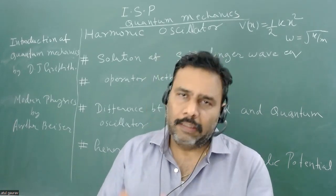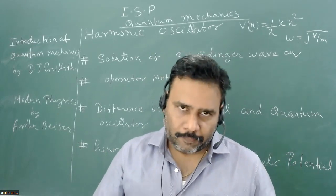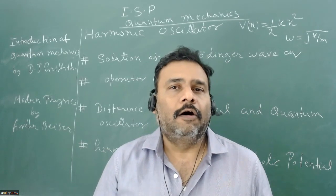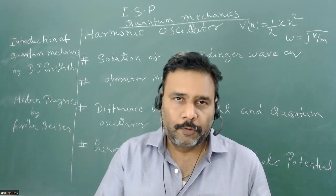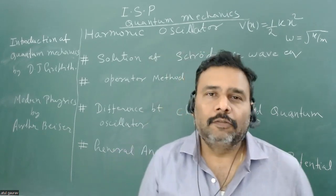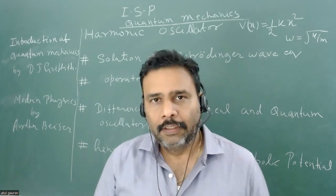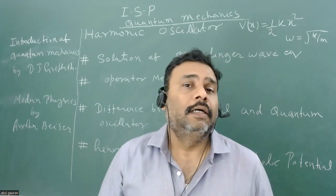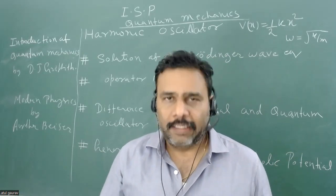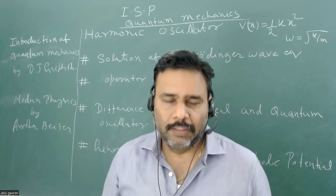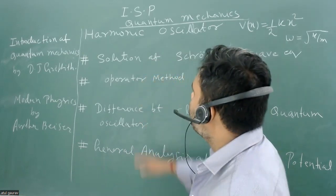You have to prepare this particular topic very nicely because from this topic they can extract all your knowledge about quantum mechanics. I will suggest two books: one is Arthur Beiser, which will give you the basic flavor of this topic, and then you can go for DJ Griffiths where you can use the operator method and all related things. In DJ Griffiths the Schrödinger equation solution is also there.